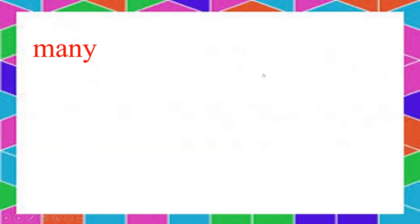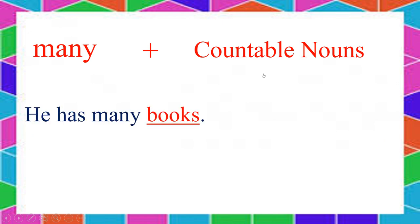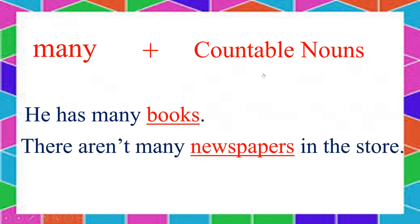Next: 'many.' Many goes with countable nouns. For example: He has many books. Or: There aren't many newspapers in the store. Books and newspapers are countable nouns, so 'many' goes with these kinds of words.